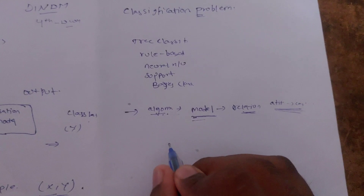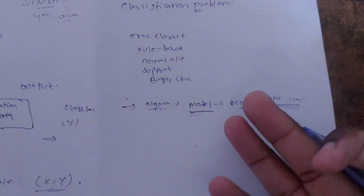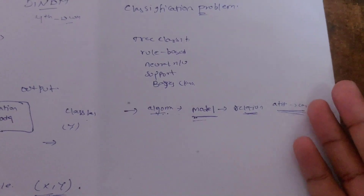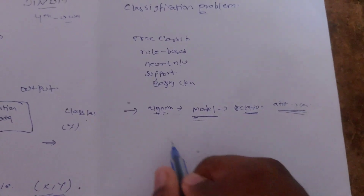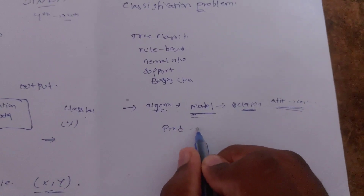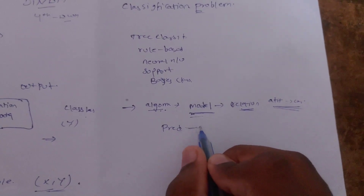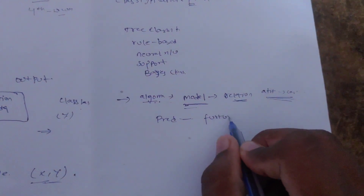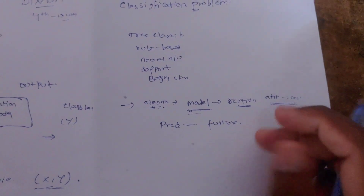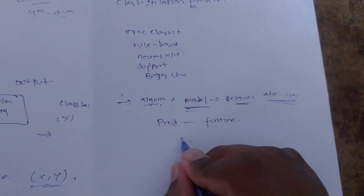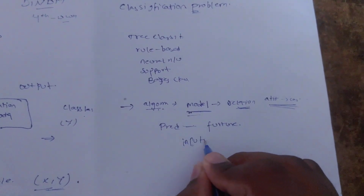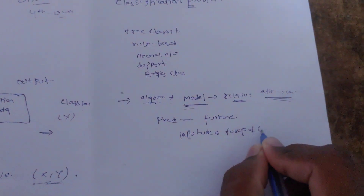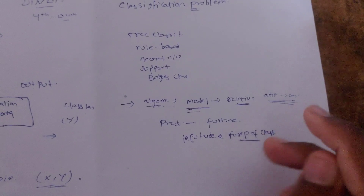The next step is to choose the algorithm. The algorithm has to fit both the input data and also predict the future classes. In predictive modeling, we use the data set to predict the future, using learning algorithms to match the input data and produce predictions of classes.